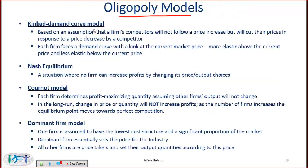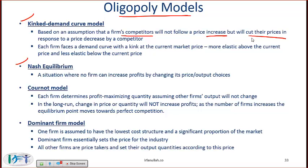Turning to oligopoly models. The kinked demand curve model is based on the assumption that a firm's competitors will not follow a price increase but will cut their prices in response to a price decrease by a competitor. You can relate this to Coke and Pepsi — if Coke cuts prices then most probably Pepsi will also cut prices, but if Coke increases prices, Pepsi most probably will not increase.